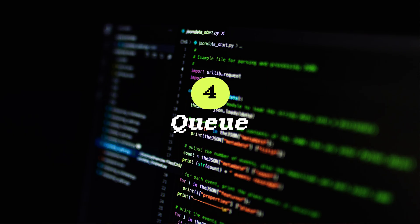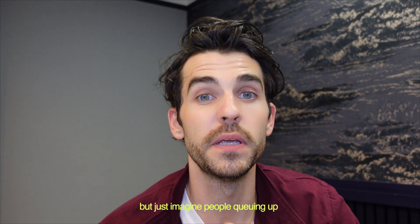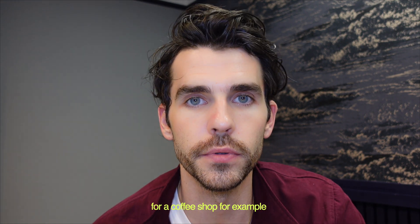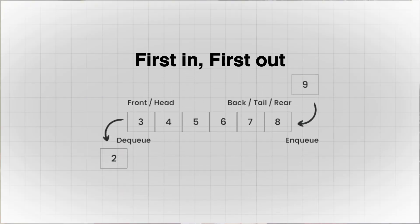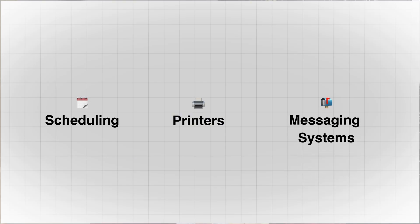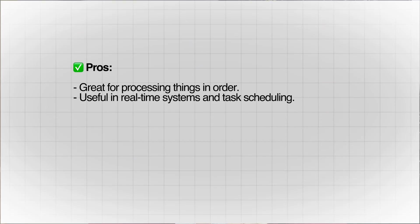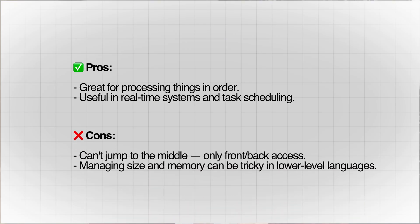Data structure number four is a queue. Very similar to stacks, but just imagine people queuing up for a coffee shop — first in, first out. Common operations are enqueue to add and dequeue to remove. It's used in scheduling, printers, and messaging systems. The pros are that it's really great for processing things in order — useful in real time systems and task scheduling. The cons are that you can't just jump into the middle, you only use it for front and back access, and in lower level languages it can be tricky managing size and memory.